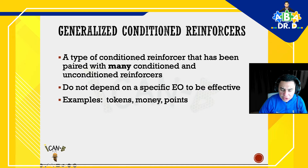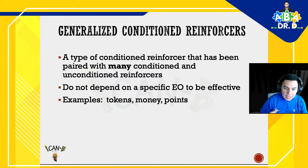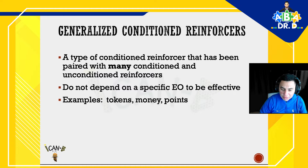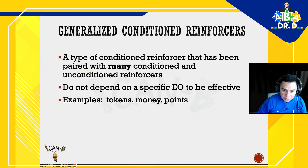Then we move on to generalized conditioned reinforcers. A generalized conditioned reinforcer is a type of conditioned reinforcer that has been paired with many conditioned and unconditioned reinforcers, and they do not depend on a specific establishing operation to be effective. These reinforcers can get you so many things — that's why money is one example. Money is such a big reinforcer because you can get so many things with it, not just one particular item.